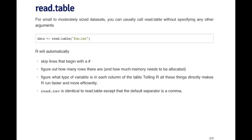It will automatically skip any lines that begin with the comment symbol. It will figure out how many rows there are, and again it will figure out what type of variable is in each column of the table. You can tell R all these things if you want to. The reason you might do that is to make it run faster and more efficiently. With small and moderate sized datasets, there's usually not much advantage to doing that because it will be pretty fast and pretty efficient as it is.